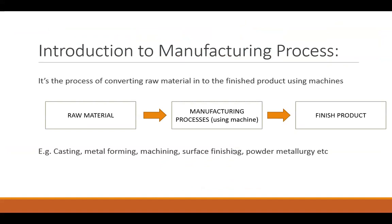Manufacturing Process is a process of converting raw material into the finished product using machines or mechanical devices. That means the raw material will be converted into the finished product with required dimensions, size and shape by carrying out different mechanical processes using machines, and that finished product will be a useful, required product.